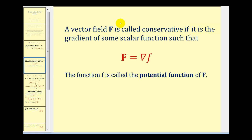A vector field F is called conservative if it is the gradient of some scalar function, such that the vector field is equal to the gradient of f. The function little f is called the potential function of the vector field big F.